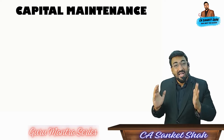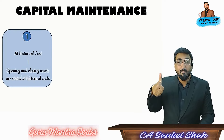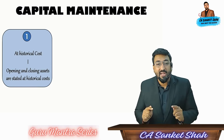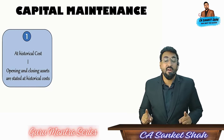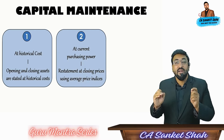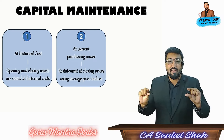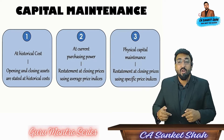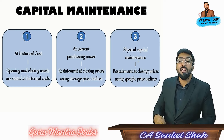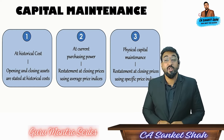Now friends, the last part of this chapter: capital maintenance. It is divided in three parts. Number one: at historical cost — opening and closing assets are stated at historical cost. Number two: at current purchasing power — restatement of closing prices using average price indices. And number three: restatement of capital prices using specific price indices, which is called as physical capital maintenance. So this is all for chapter number two.